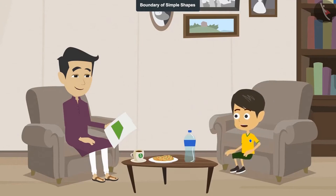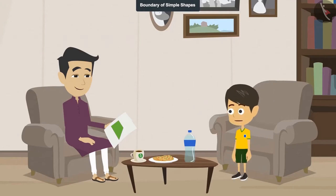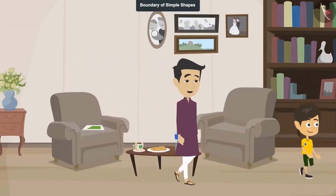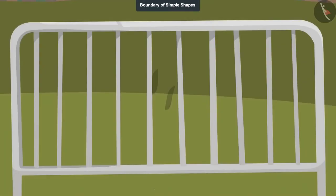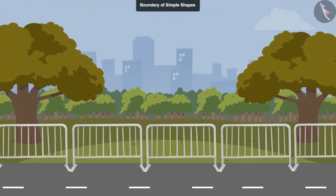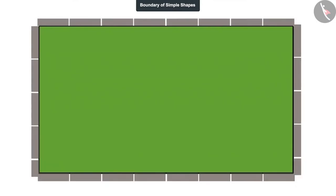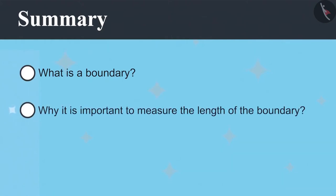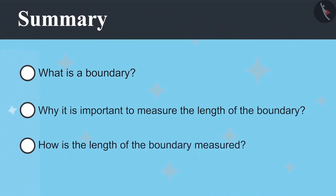Understood. Now come to the park with me. Yes, let's go. Do you know that a grill has been installed on the park's boundary, and the length of the boundary would have been measured for that as well. Today you learned what is a boundary, why it is important to measure the length of the boundary, and how is the length of the boundary measured.